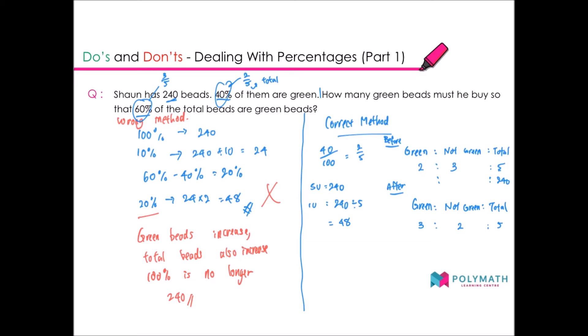So the green beads will be 2 times 48, that will give me 96. And then 48 times 3 will give me the not green beads, that will be 144. So not green will be 144.